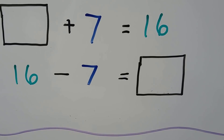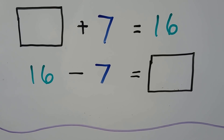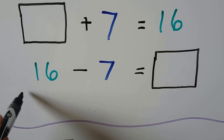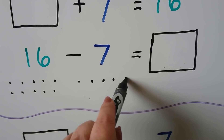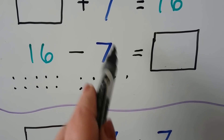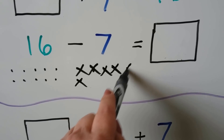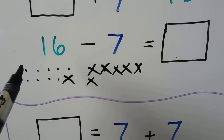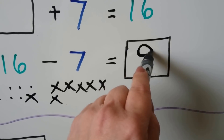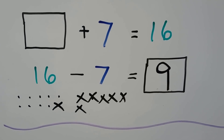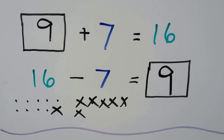An unknown number plus 7 is equal to 16. We can use the related fact: 16 minus 7 equals the unknown number. We make 16 dots and take away 7 — 1, 2, 3, 4, 5, 6, 7 — and that leaves 1, 2, 3, 4, 5, 6, 7, 8, 9. So 16 minus 7 equals 9. The missing number is 9, and 9 plus 7 equals 16.